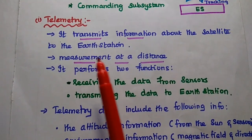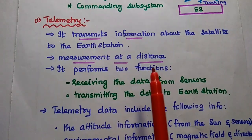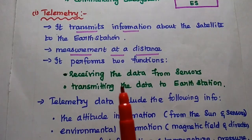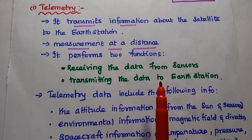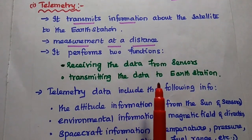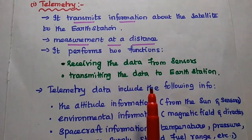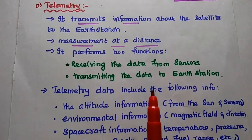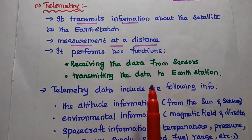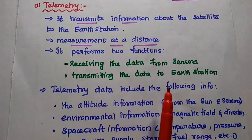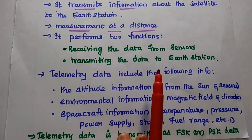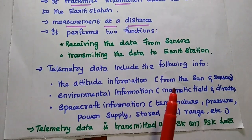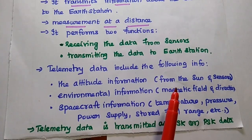Telemetry transmits the information about the satellite to the earth station. Telemetry means measurement at a distance. This system performs two important functions: one is receiving data from sensors in the satellite as well as other information like environmental factors and attitude information, and then transmitting that data to the earth station. The telemetry data includes attitude information from the sun, air, and the sensors in the satellite.